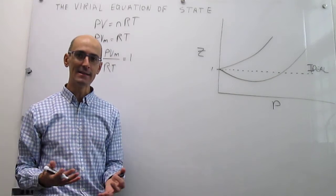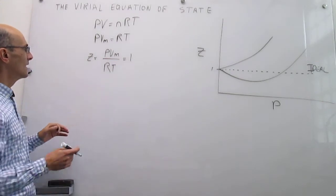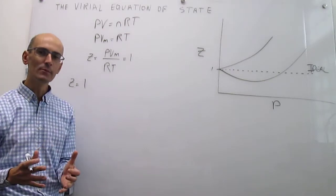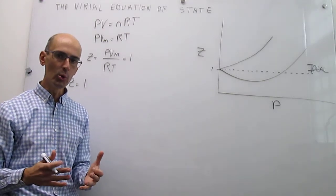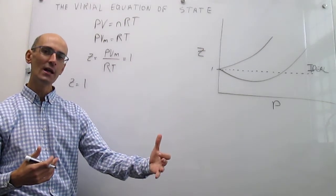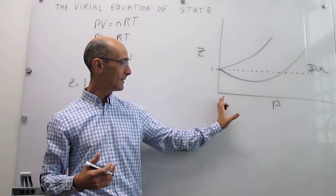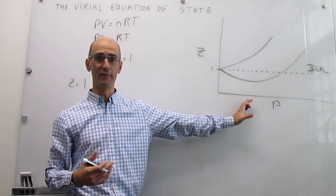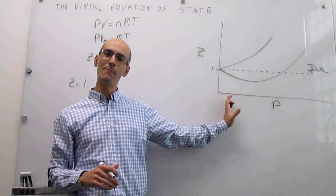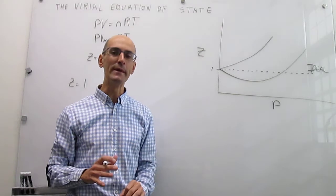A way that this is done with the virial concept is to simply consider that this Z value, which you expect to be 1, is simply the lower order term in an expansion that is done on the variable that breaks down the model. So clearly we see here that pressure is the variable that breaks down the model. If you have low pressures the ideal model works really well, but if you start to increase the pressures then deviations from ideality start to appear.